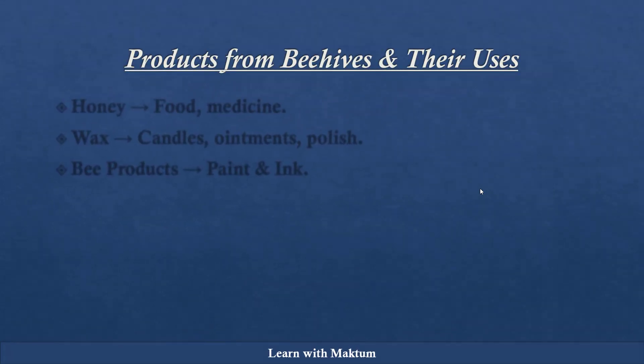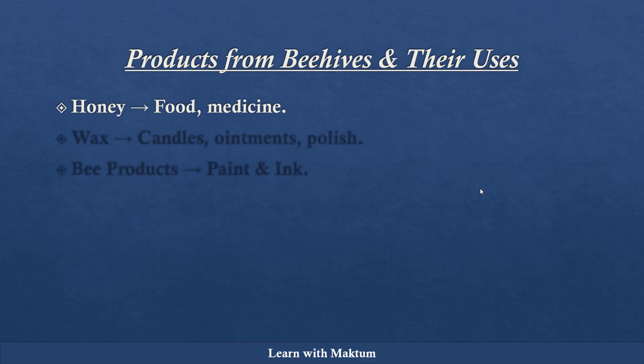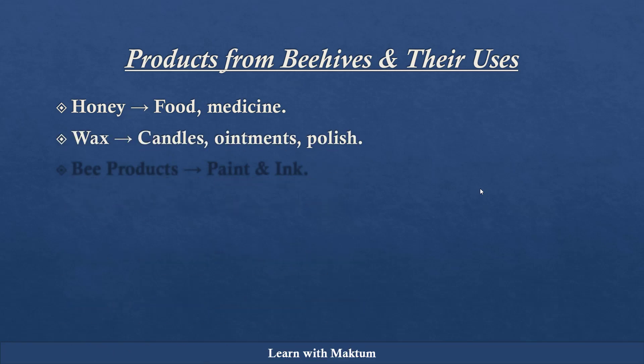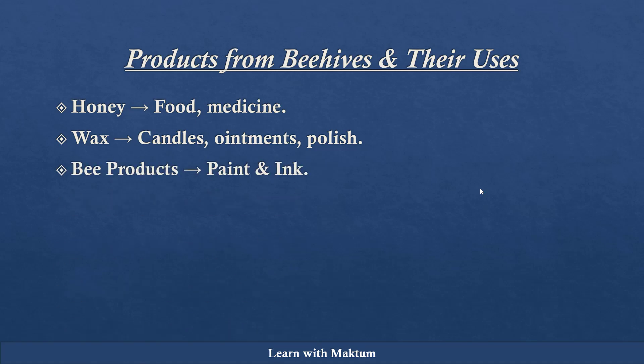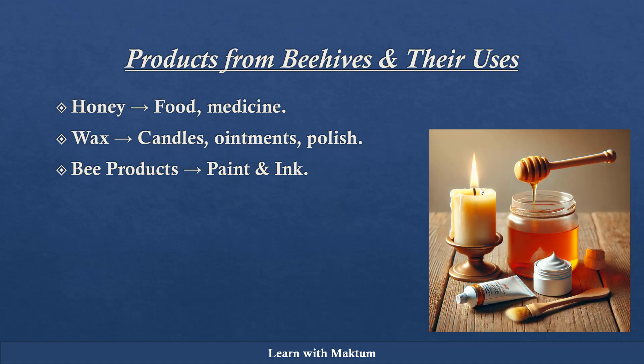Now come the uses. What are the products we get from the hive or the honey? Firstly, honey is used as food and medicine. And the wax that is there can be used in the preparation of candles, ointments, and polish. Apart from that, whatever bee products we get are used in the preparation of paint and ink.